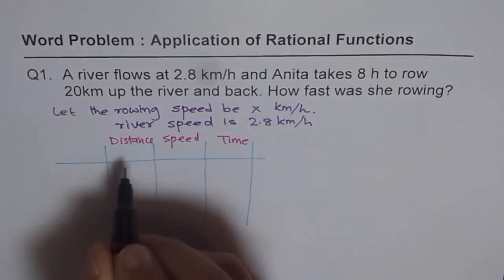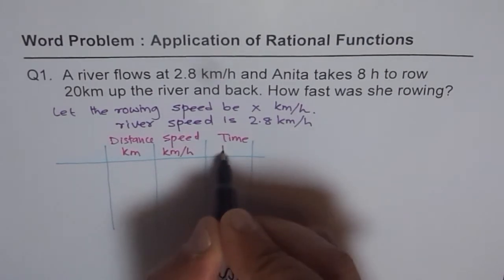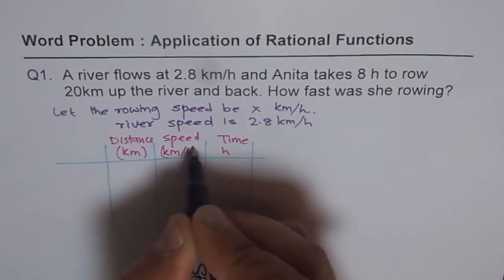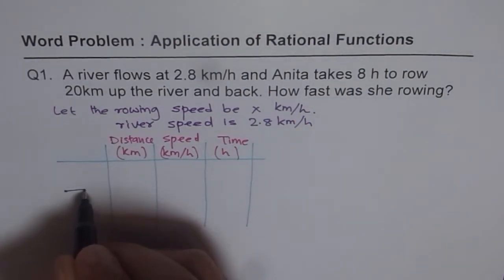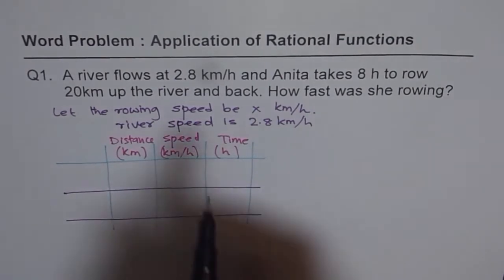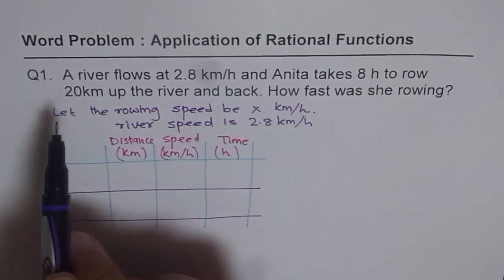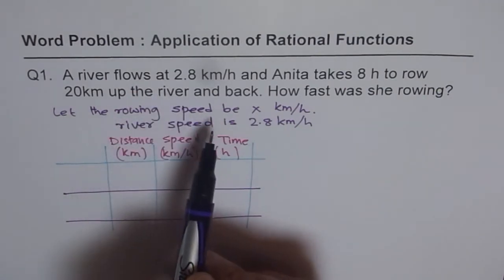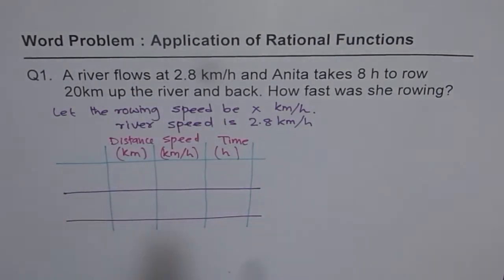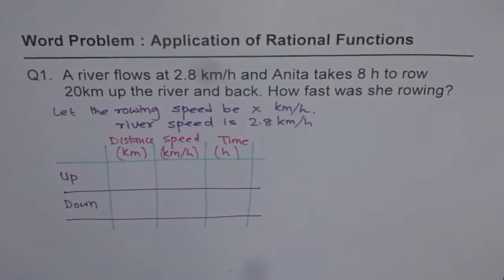The units are: distance in kilometers, speed in kilometers per hour, and time in hours. We also need rows for up the river and down the river, since Anita rows both ways. That is how we make this matrix.